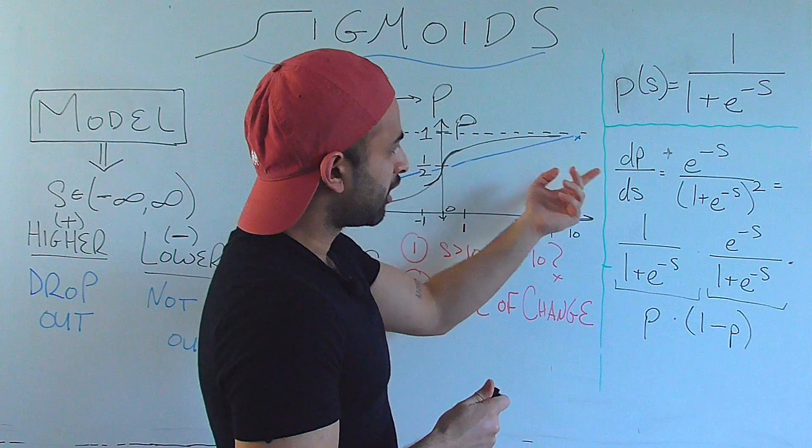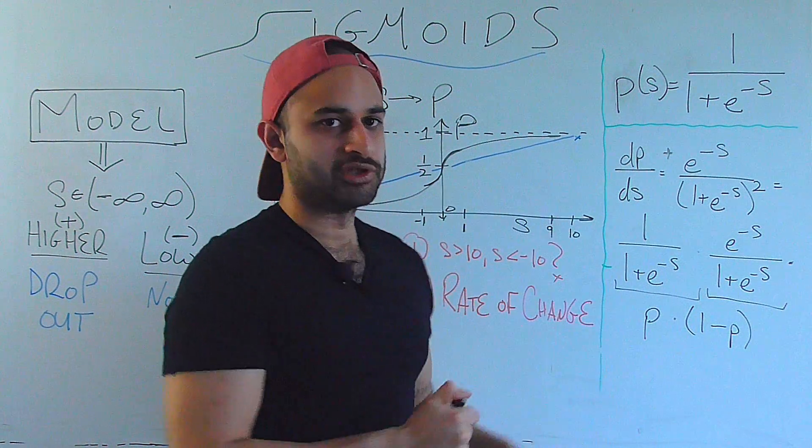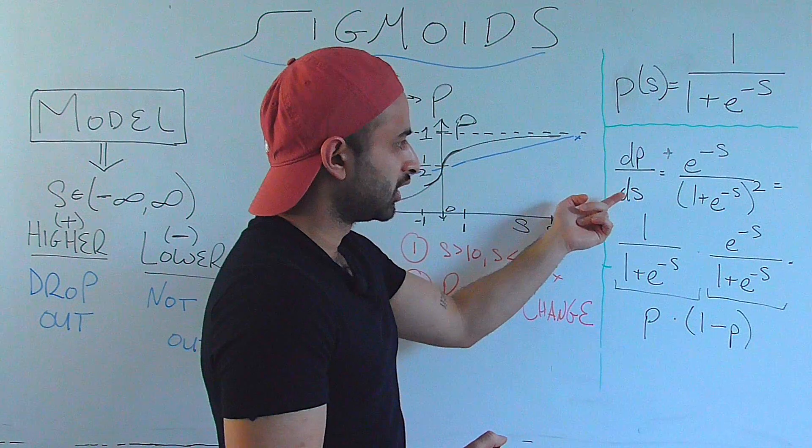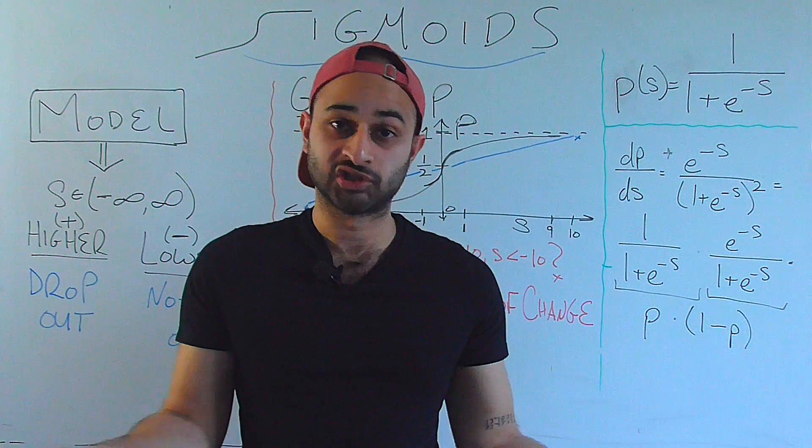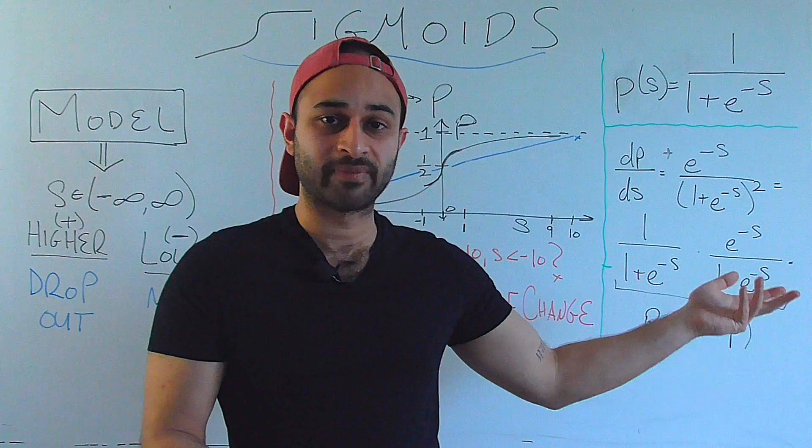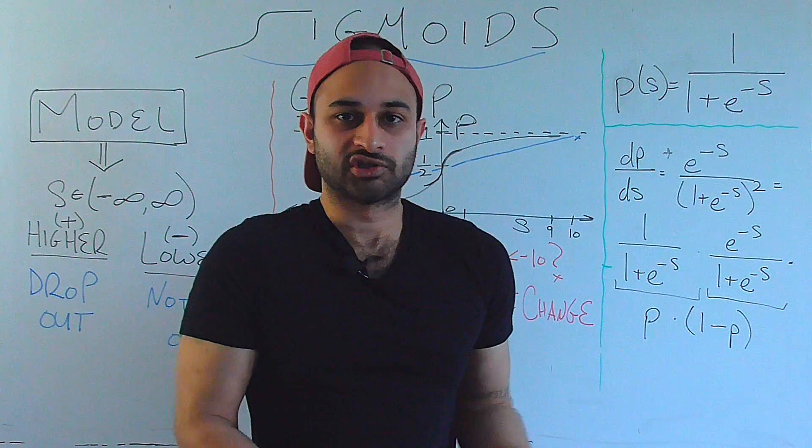Does that intuitively make sense? Yes, because if your probability was already very high, which means your score was also very high, then a small change in your score is basically going to change your probability by 0. Basically, you already have so much evidence that the student is going to drop out that a little change in the score doesn't change anything.